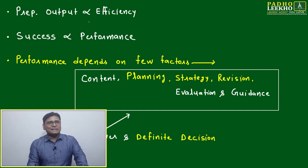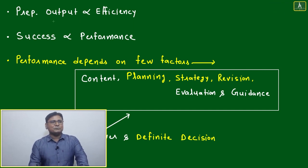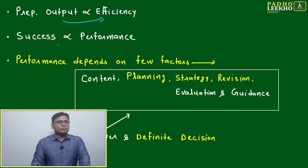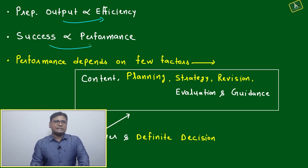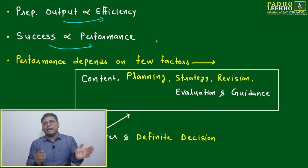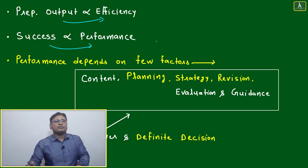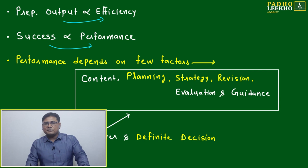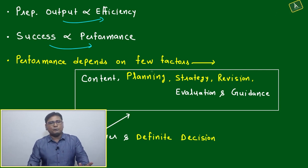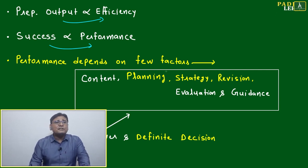There's a mathematical relation: preparation and output are directly proportional to efficiency. Success is proportional to performance. Keep this flow diagram in mind - time, energy, focus, efficiency, output, performance, then success. Performance depends on several factors.